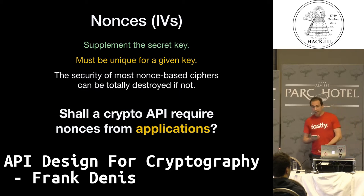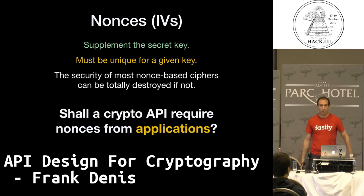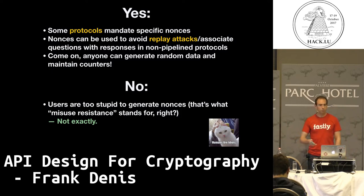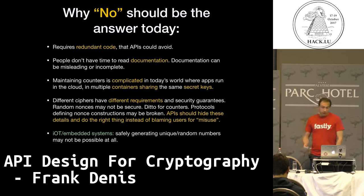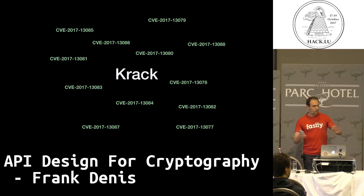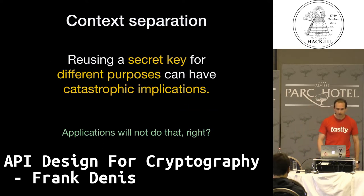Nonces and IVs are simple in theory — just a number that some primitives expect; you provide a unique number for a given key and message. A new message needs a new number. Sounds easy, except it's actually really tricky to get right, and it's getting worse with cloud computing. Traditionally, crypto libraries require applications to provide a nonce — this is a terrible idea, because if you don't do it right you end up with disasters. Don't do it anymore. In any modern crypto library the API should manage nonces entirely by itself, in a safe way.